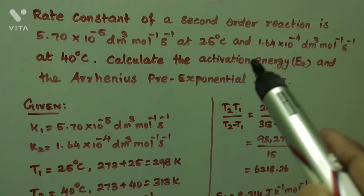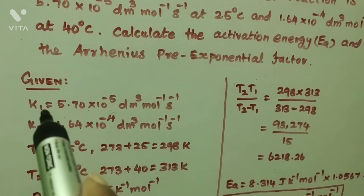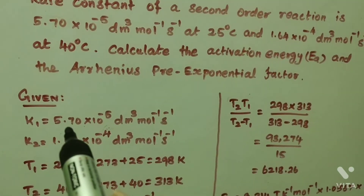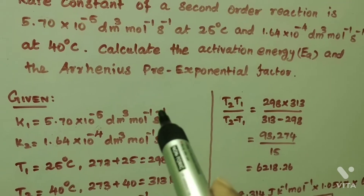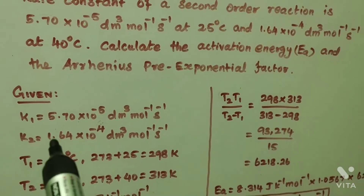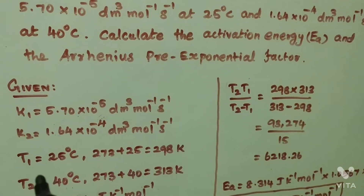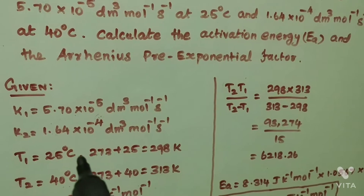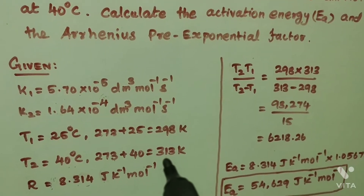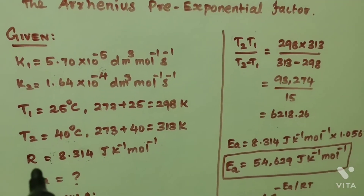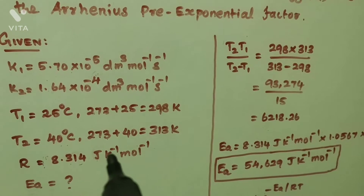The given data are as follows: K1 = 5.70 × 10⁻⁵ dm³ mol⁻¹ s⁻¹; K2 = 1.64 × 10⁻⁴ dm³ mol⁻¹ s⁻¹; T1 = 25°C = 298 K; T2 = 40°C = 313 K; and the gas constant R = 8.314 J K⁻¹ mol⁻¹.